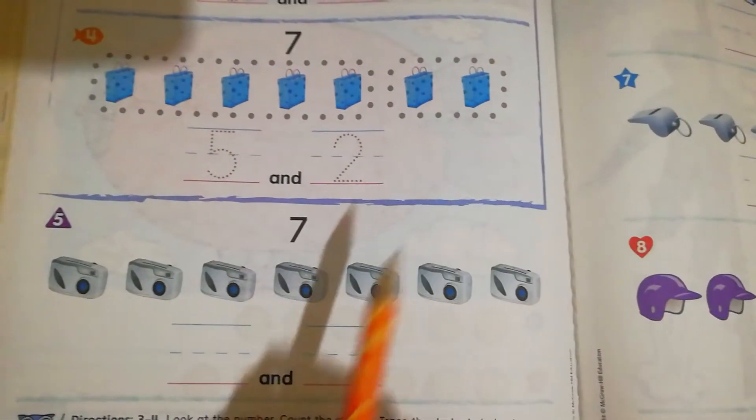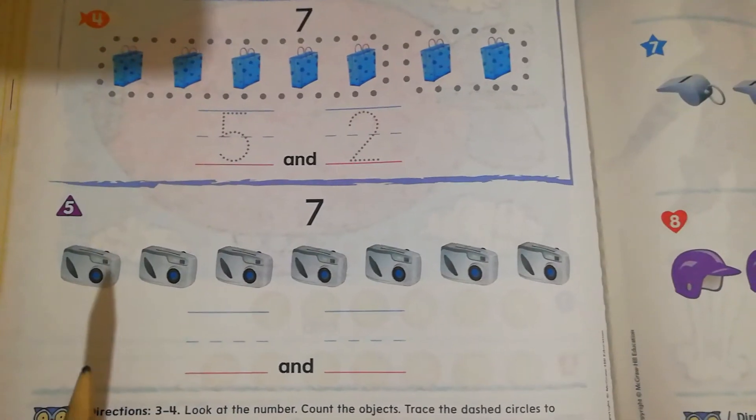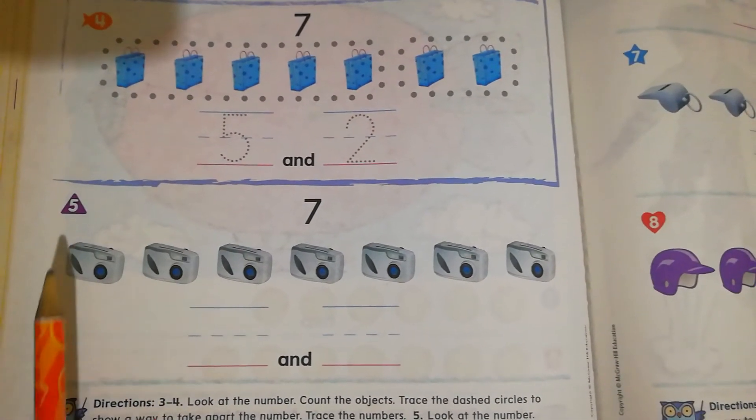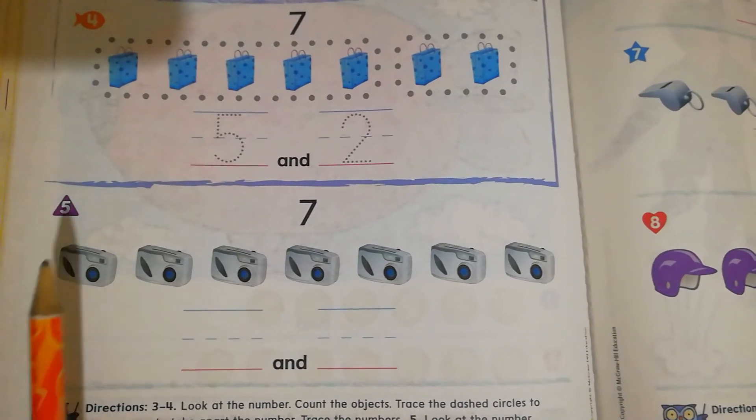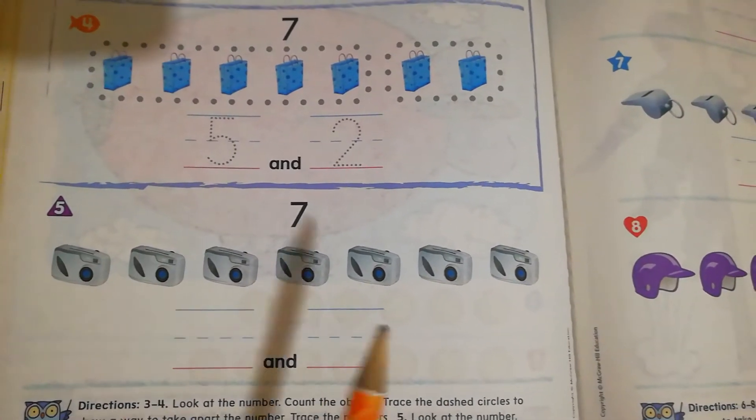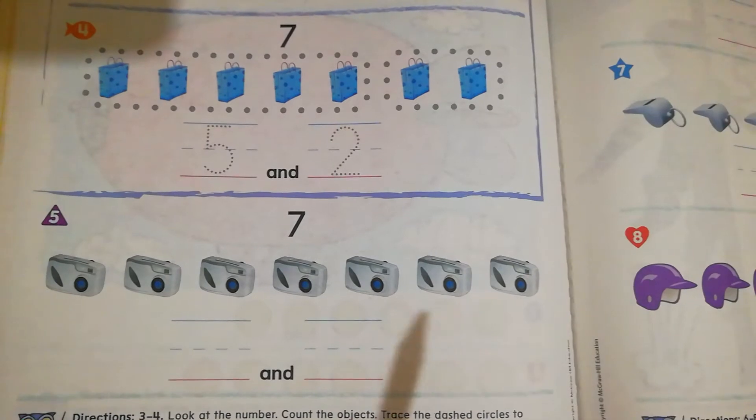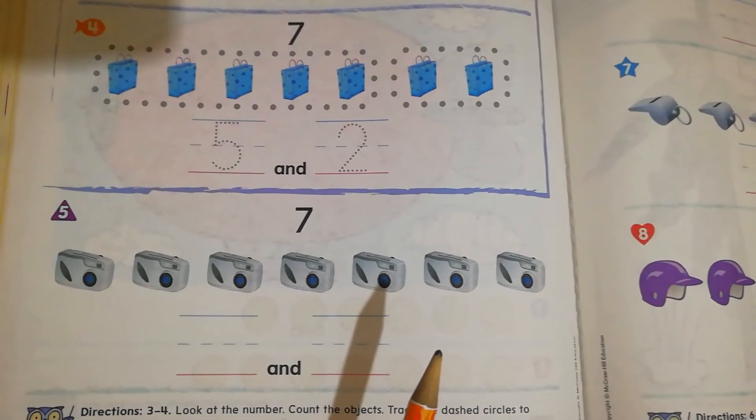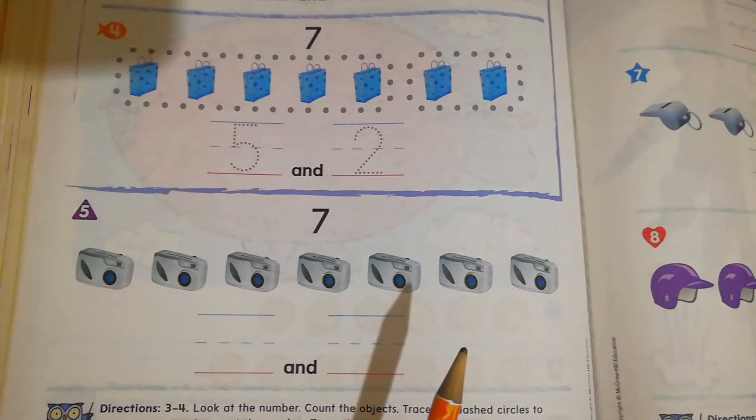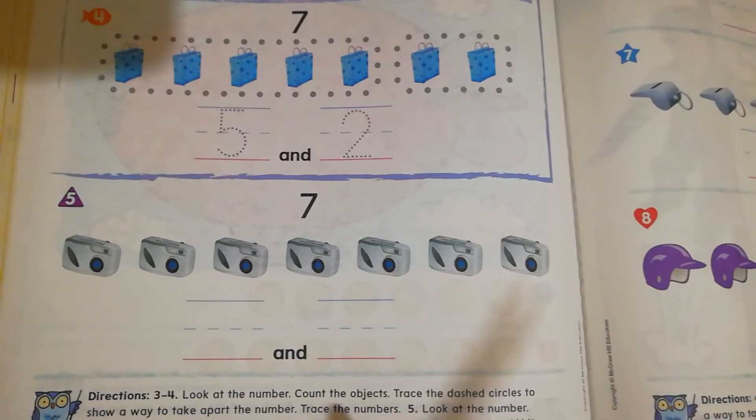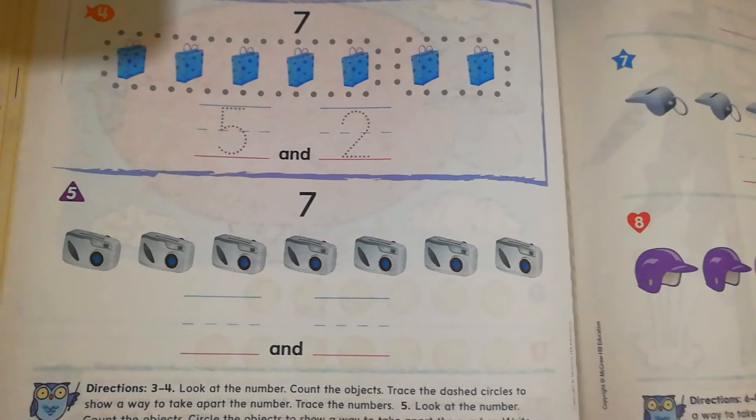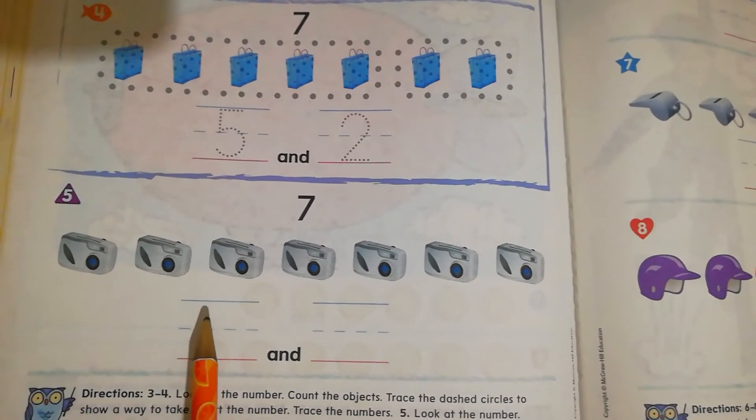Now here we have seven as well. We have seven objects. We want to take them apart and put them into two different groups. How can we do that? We circle objects in the first group, then we put a certain number of objects in the second. How can we do them? It's for you to tell me how can we do it.